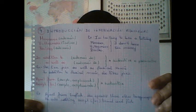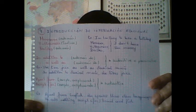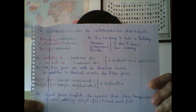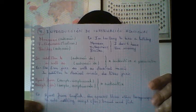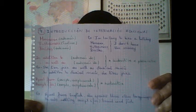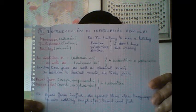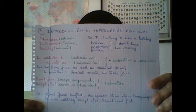Luego tenemos: in addition to, as well as, que significan ambos además de, y van seguido de sustantivo o pronombre. For example: in addition to classical music, she likes jazz. She likes jazz as well as classical music.